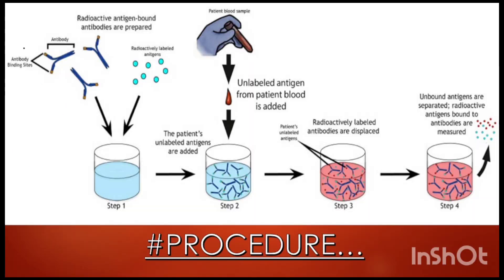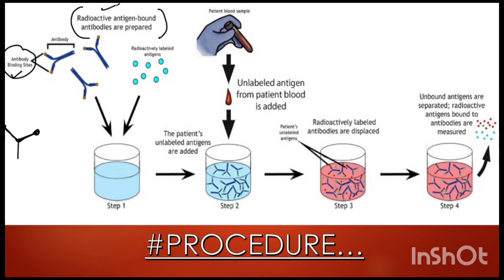Now here you can see - it is written 'antibody binding site.' An antibody is shown, and we know that on every heavy chain of the antibody there is an antigen binding site. So it shows one antibody with its antibody binding site where antigens will come and bind. It is written: radioactive antigen bound antibodies are prepared.